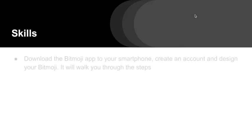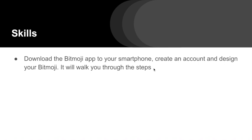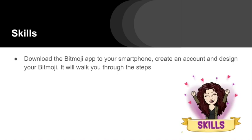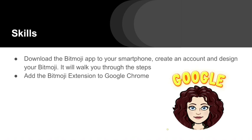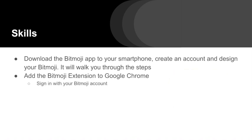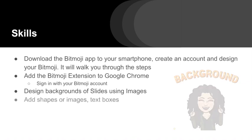For the skills that we need to talk about, the first thing you're going to need to do is download the Bitmoji app to your smartphone. If you don't have a Bitmoji, you'll create an account and design one — it'll walk you through the steps. You're then going to add the Bitmoji extension to Google Chrome and sign in with your Bitmoji account. Then you're going to start designing backgrounds of slides using images.